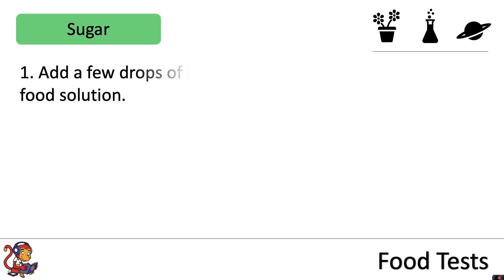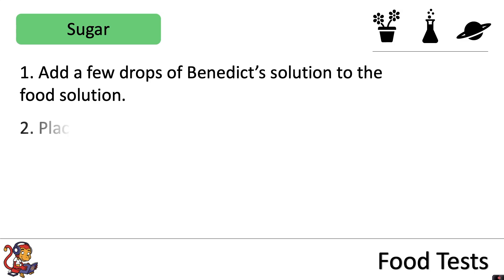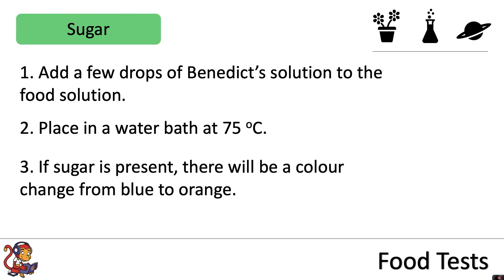When testing for sugar you would add a few drops of Benedict's solution to the food solution. You would place it in a water bath at 75 degrees C. If sugar is present there will be a colour change from blue to orange.